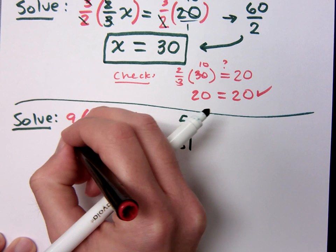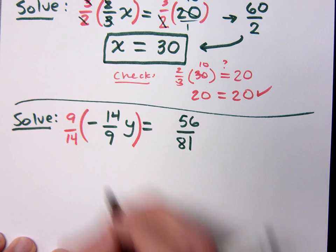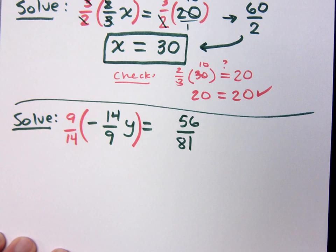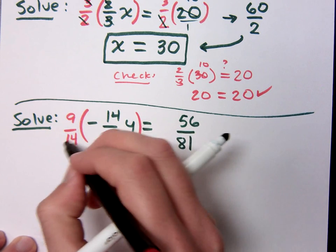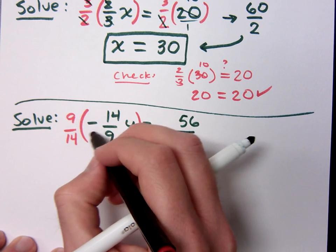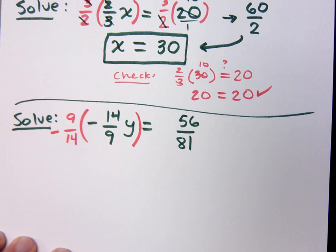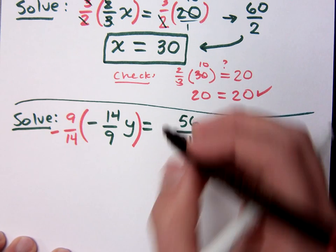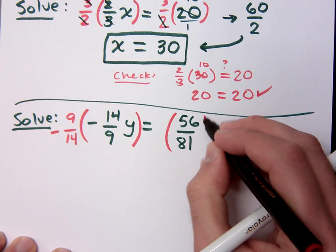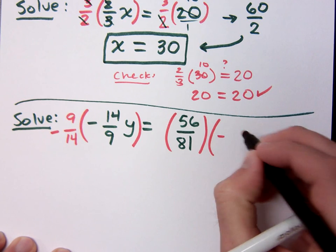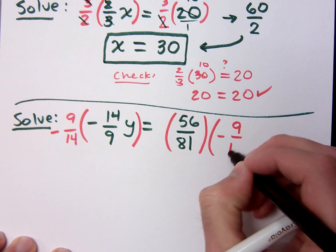If you just do 9 over 14, let me show you what happens here. If you just do 9 over 14, the 9s reduce, the 14s reduce, but you still have this negative, right? So that's not really the reciprocal. You need negative 9 over 14. And of course, what you do on one side, you do on the other side. So multiply times negative 9 over 14.